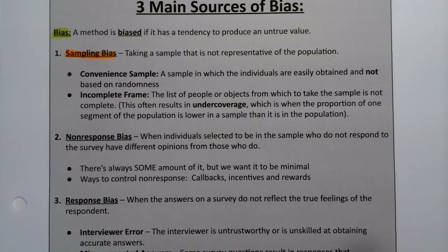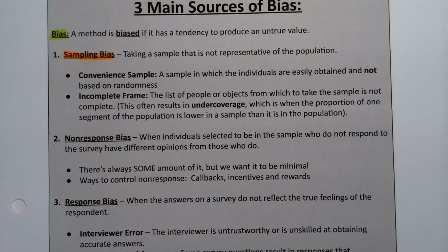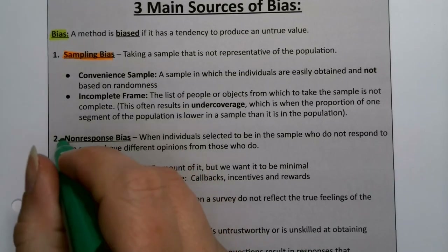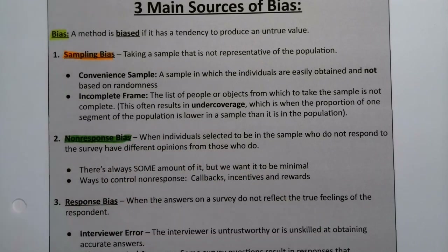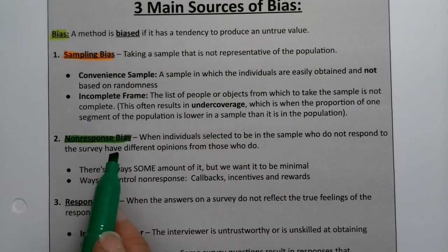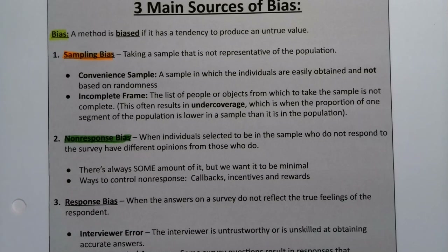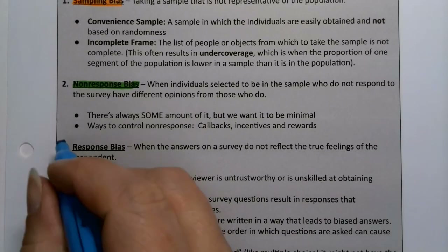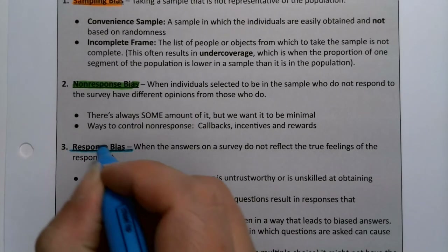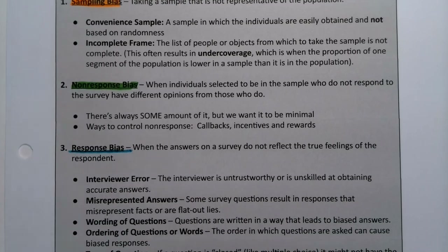Then there's non-response bias. Non-response bias is when your sample was fine, but people aren't responding to you — they hang up on you or whatever. And then there's response bias, which is when they might be answering you untruthfully, or you might have posed bad questions. We'll talk about all of them.